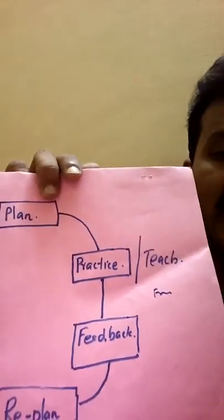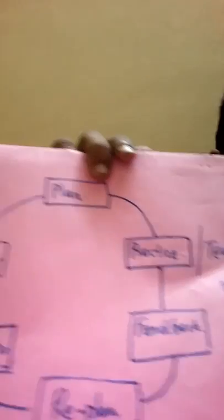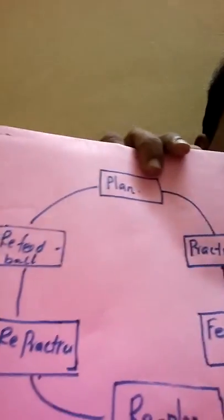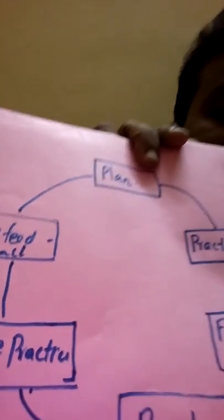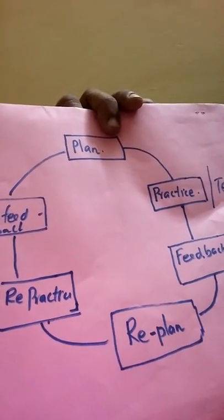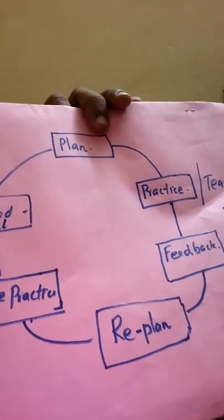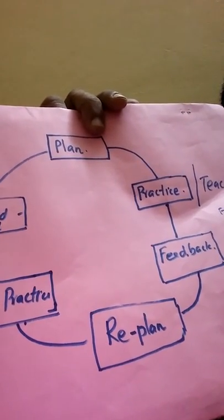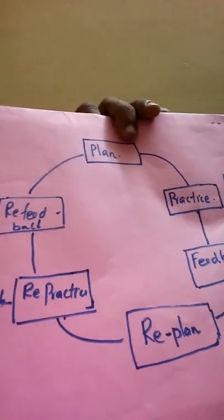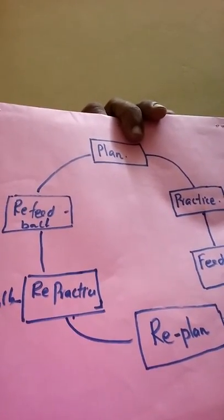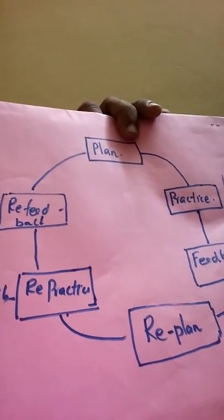What is actually going on? We have to plan at first. It is: plan, practice, re-plan, feedback, then plan, practice, feedback — like that.